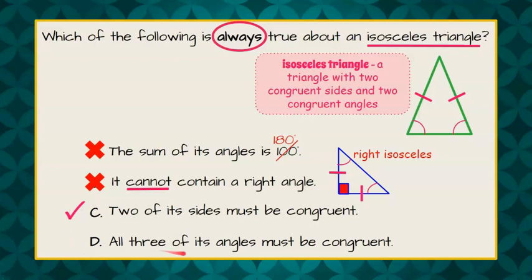D states that all three of its angles must be congruent. Well, when all three sides of a triangle are congruent, it's an equilateral triangle.